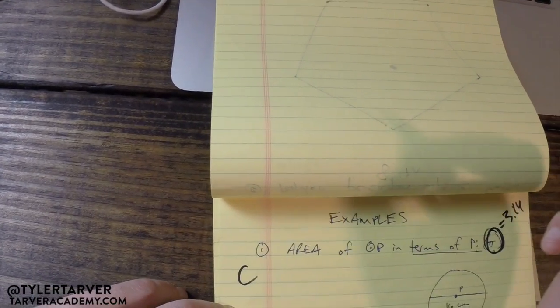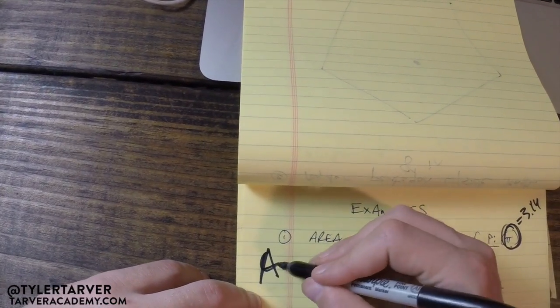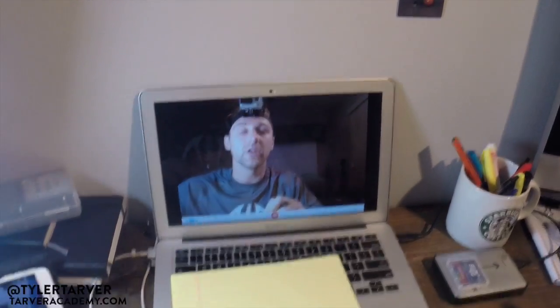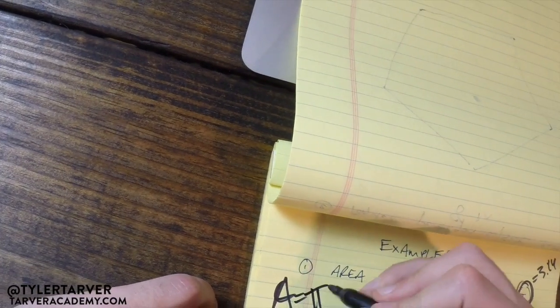Now, if you'll remember the formula for area, which is not circumference, area equals, what is it ladies and gentlemen? 3, 2, 1. It is area equals pi r squared.